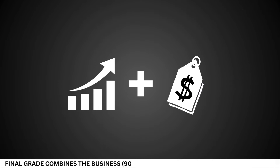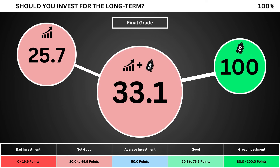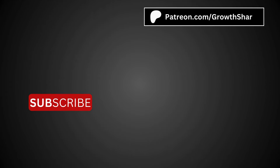Finally, we can put everything together and get the company's final grade. Adding the business grade and the fair price grade, we can see the company's final grade here. Anything less than 50 means it's not a good long-term investment; a final grade above 50 means it would make a good long-term investment if you bought the stock right now. So what are your thoughts? Are you going to invest? If you do, invest wisely. And as always, take care of your money.